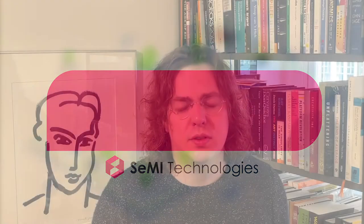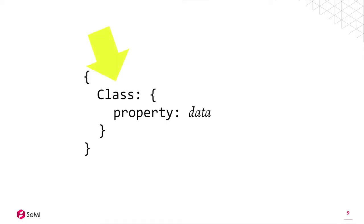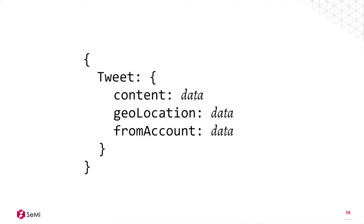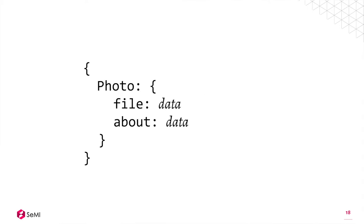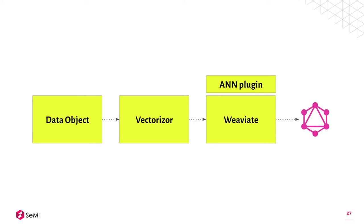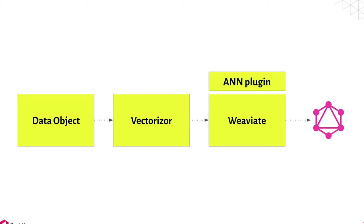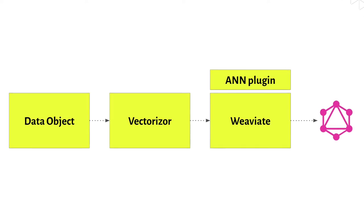Weaviate is a vector search engine. At the highest level, Weaviate has a very simple class-property structure: you have a data object with a class, then a property, and then you can add your data. What you're adding to Weaviate really doesn't matter — you can store news articles, financial transactions, cybersecurity threats, scientific articles, web pages, legal documents, social media posts, insurance documents, or even photos, videos, and audio. When you store data in Weaviate, you can store objects using vectors you've created yourself, or by using one of the out-of-the-box vectorizers. The custom ANN implementation has full CRUD support, making Weaviate a full-fledged database you can use in production.